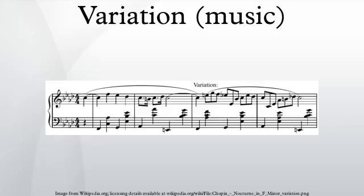Keyboard works in variation form were written by a number of 16th century English composers, including William Byrd, Hugh Aston, and Giles Farnaby. Outstanding examples of early Baroque variations are the Chaconne of Claudio Monteverdi and Heinrich Schütz.